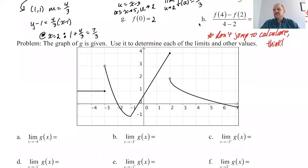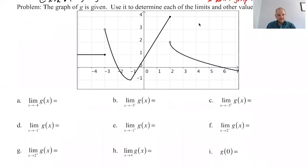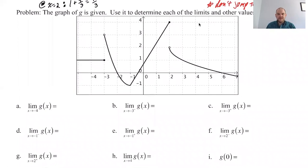All right, I'm back. We are on page 252 doing the second problem. So I'm on the second graph. We just did the other stuff. So the graph of G is given. Use it to determine each of the limits and other values. So maybe we're not asked for limits for some of these. All right, let's see. I think we can do these sort of quickly, maybe. So let's find out.